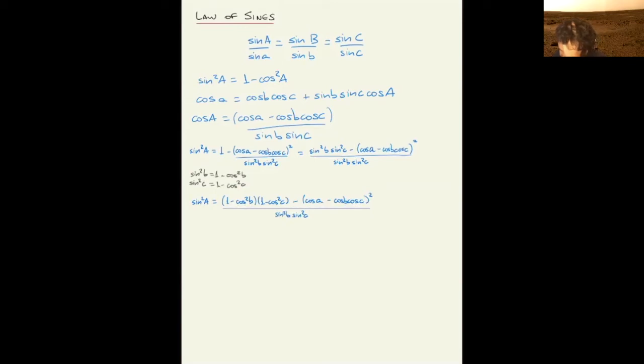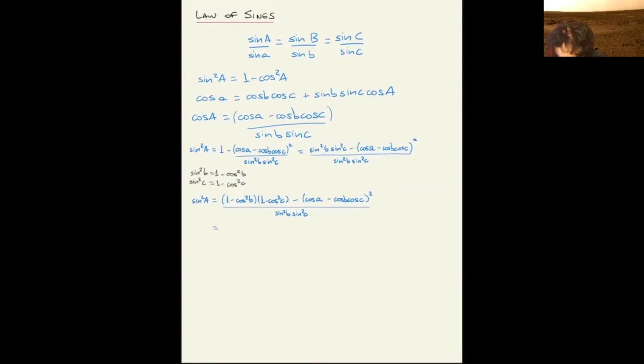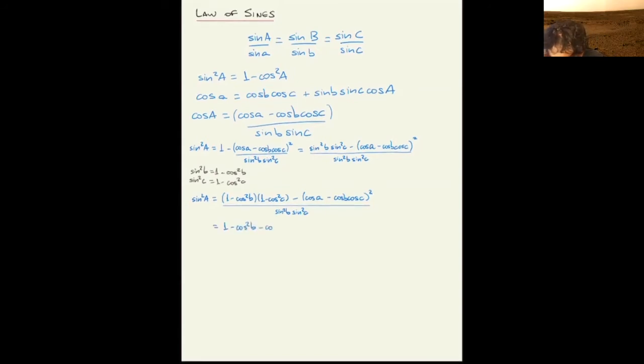Now expand this multiplication and squares. You have 1 minus cosine of b squared minus cosine of c squared plus cosine of b squared cosine of c squared.